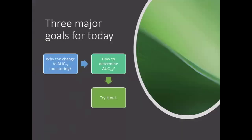We have three major goals for today. We're going to spend some time talking about why the change to AUC 24 — AUC 24 refers to area under the curve over a 24-hour period — why the change to that monitoring has been suggested, what are the ways to determine AUC 24, and then we're going to try it out. But before we get to work, I want to take a few moments with this warmup.